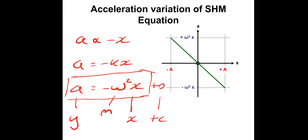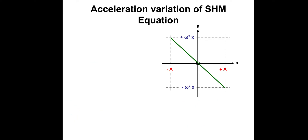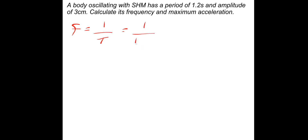So let's do a couple of questions using the equation a = −ω²x. A body performing SHM has a period of 1.2 seconds and an amplitude of 3 cm. Calculate the frequency and maximum acceleration. The frequency is simply 1 over the time period: 1 divided by 1.2, which gives a frequency of 5/6 Hz, or 0.833 recurring Hz.